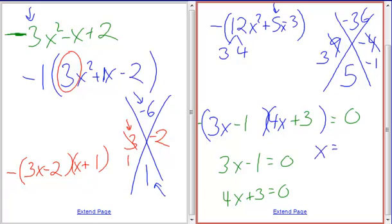So x equals, what was the one up here? 1 third. 1 third. Positive 1 third. And the other one is going to be negative 3 fourths. Oh, negative 3 fourths. All right. Very nice stuff.